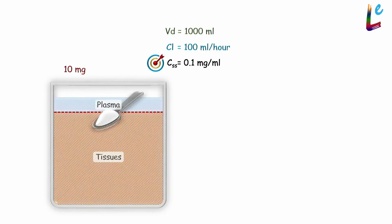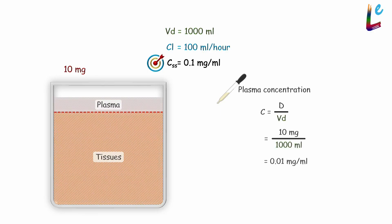After the first dose of 10mg, the plasma concentration we achieved would be C equals D by VD, which equals 10mg by 1000ml, which equals 0.01mg per ml. This is way lower than our target concentration of 0.1mg per ml.